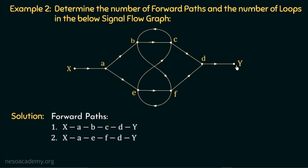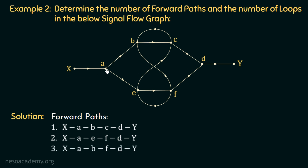So till now we have two forward paths. Let us find more. Starting from node X, we move to node A, then to node B, then take the branch to node F, then to node D, and finally to output node Y. This is the third forward path: X, A, B, F, D, Y.